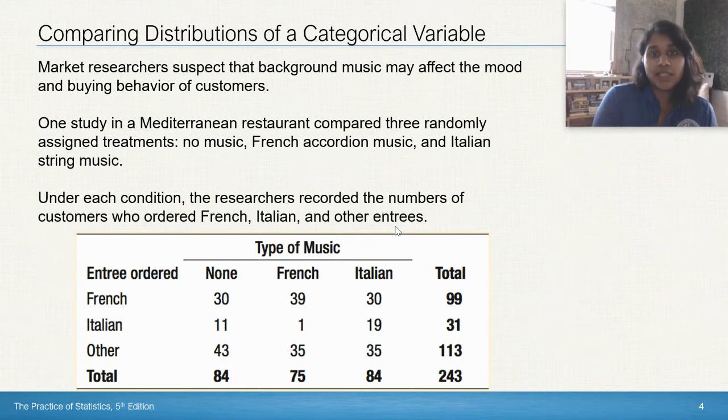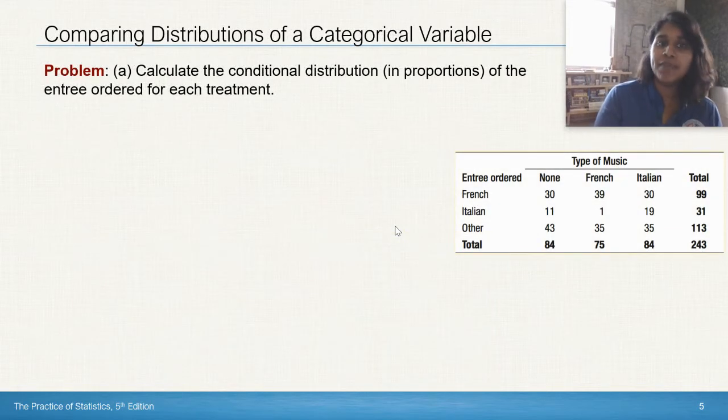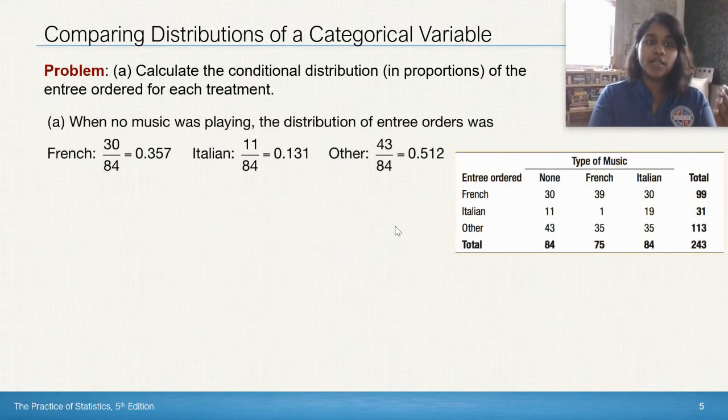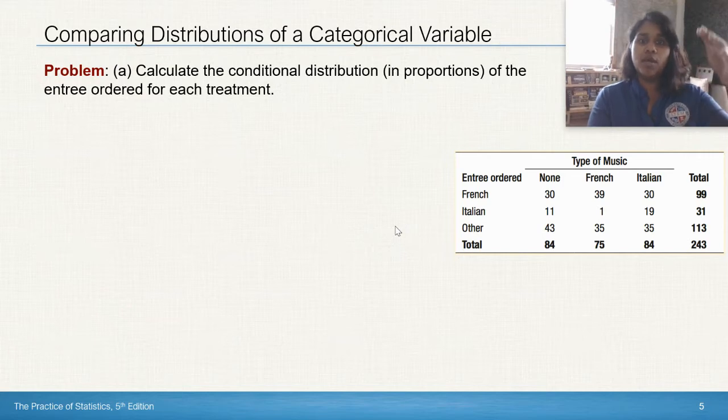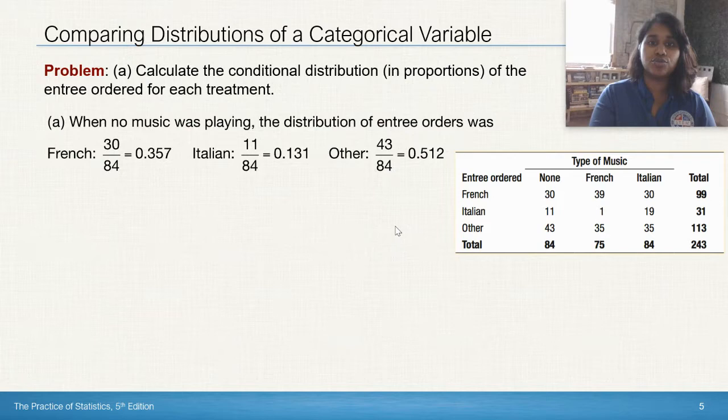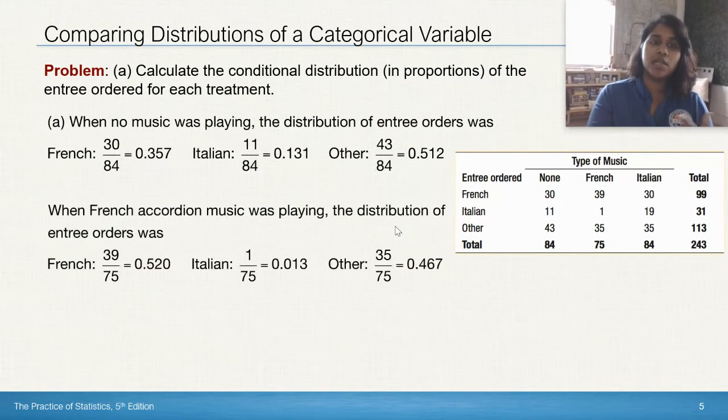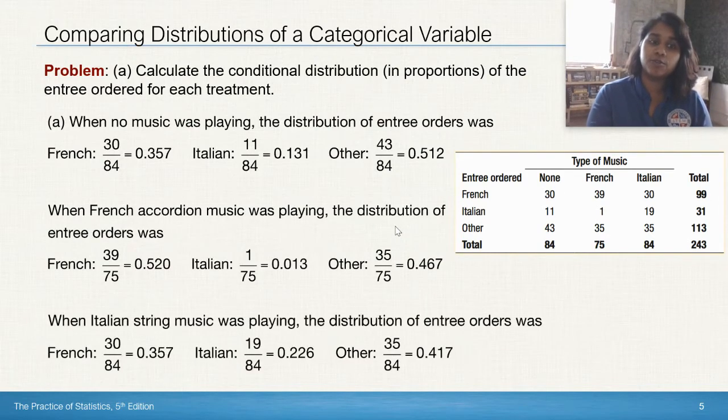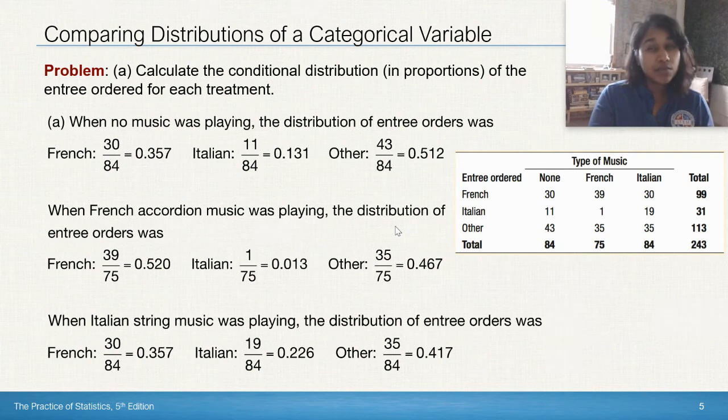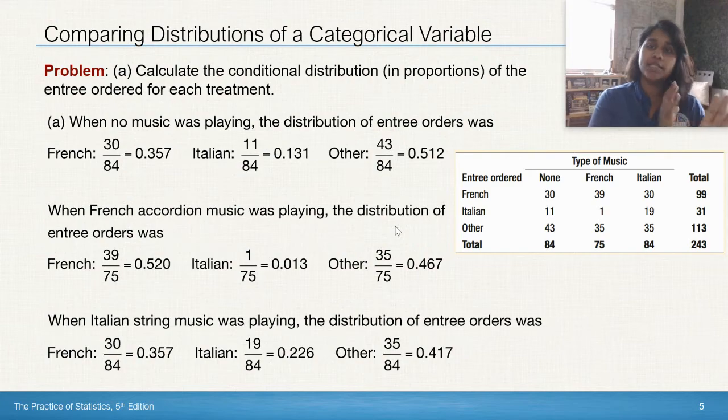To really understand that two-way table, I need to make it values that make sense, aka their proportions. So we're going to do our conditional distribution. The first one is by each treatment, so all by the columns themselves. So here's our first treatment, no music. Here's our second treatment, French music. Here's our third treatment, Italian music. If you need to review how to do conditional distributions, don't hesitate to do so.